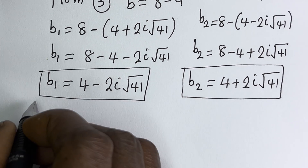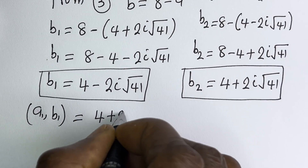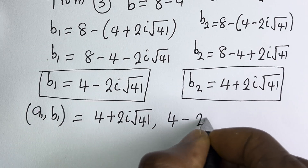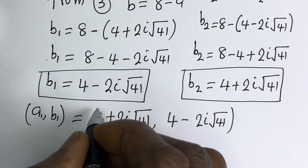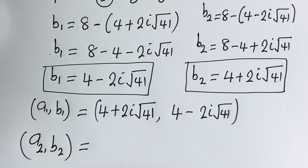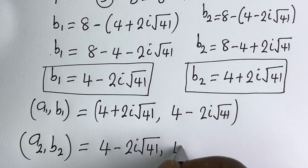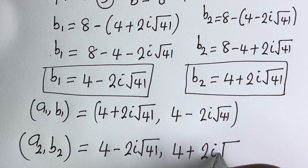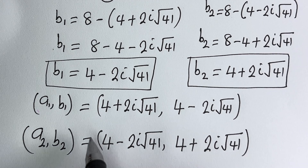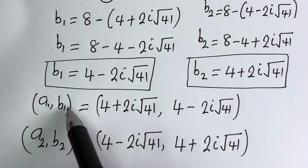Our final answers are: A1, B1 equals 4 plus 2i square root of 41. And A2, B2 equals 4 minus 2i square root of 41. We can see that the value of A1 equals the value of B2, and the value of B1 equals the value of A2.